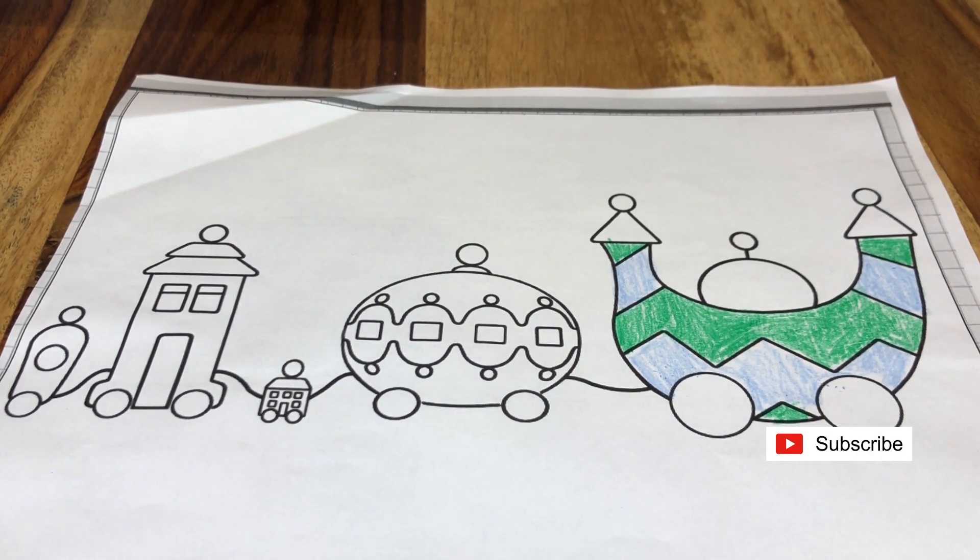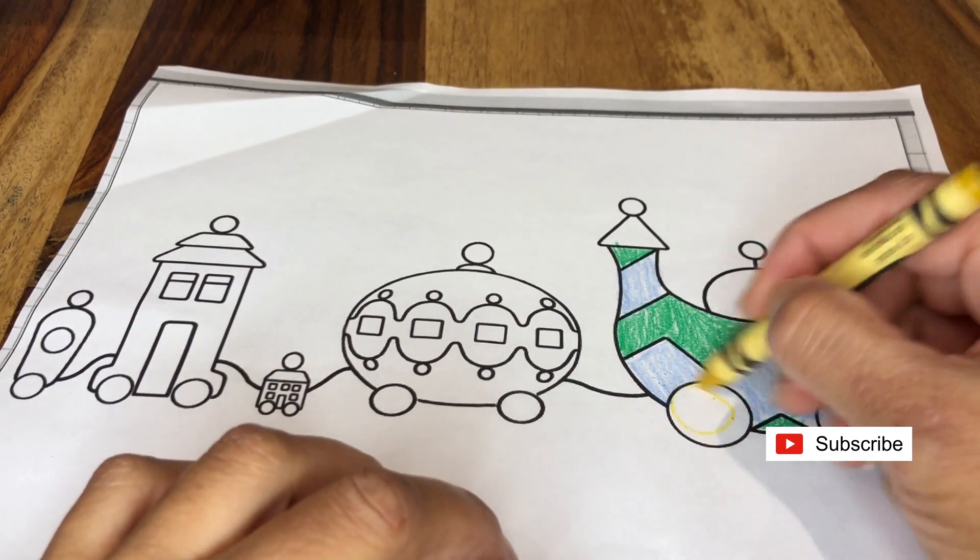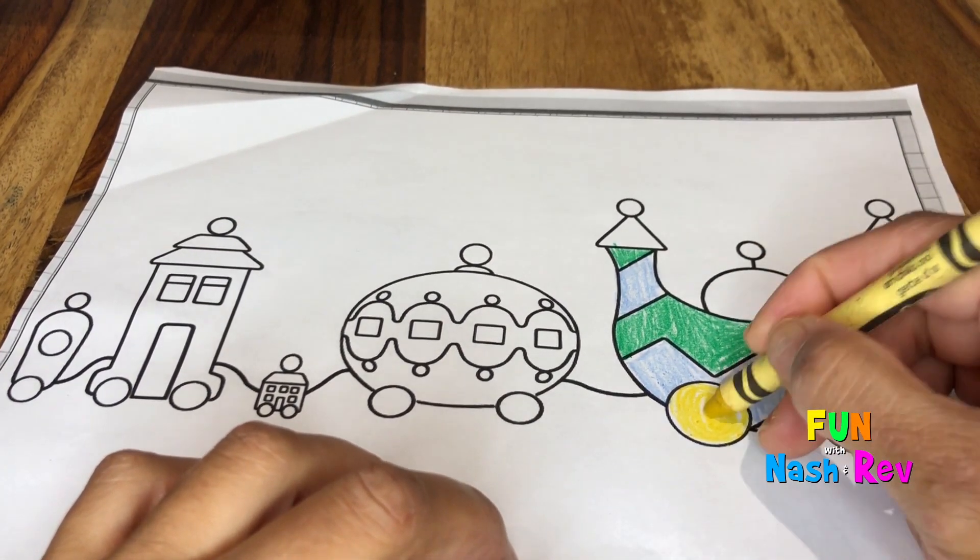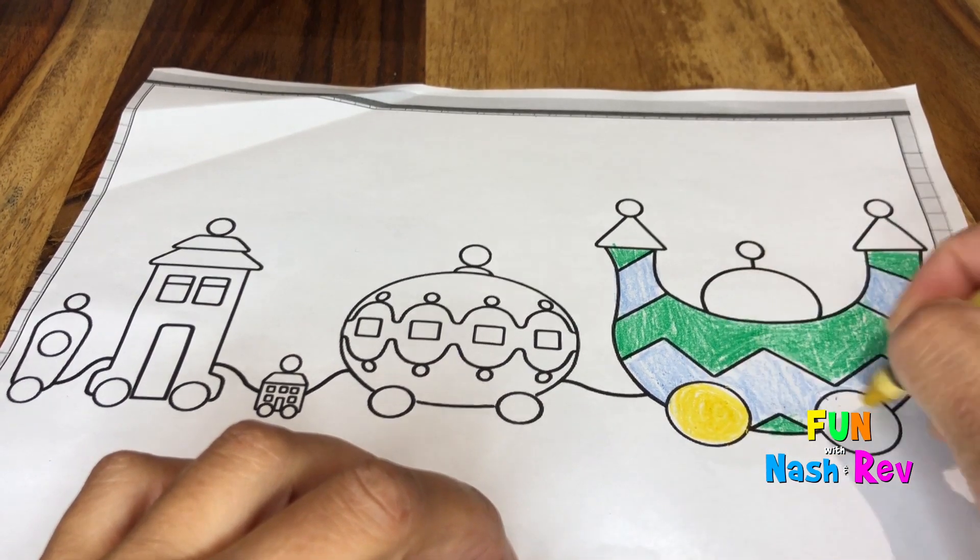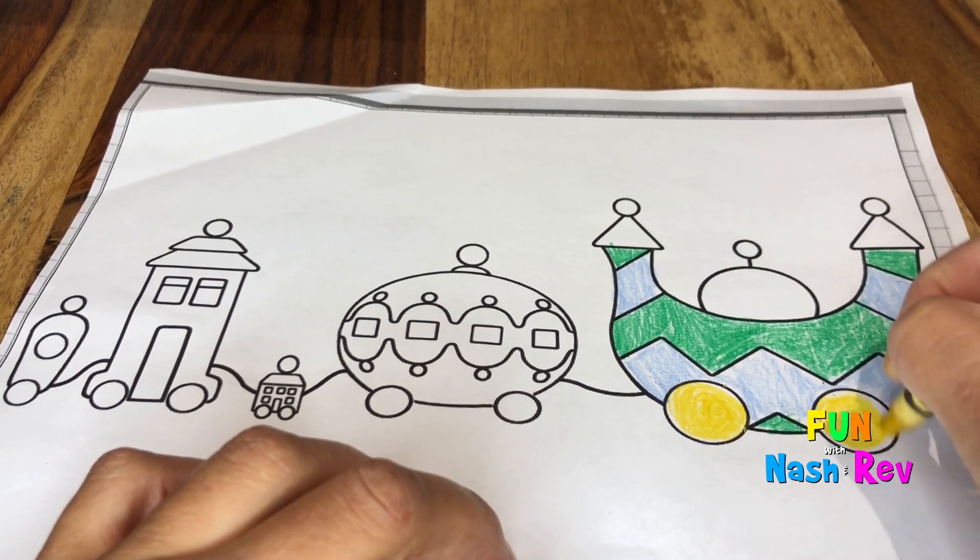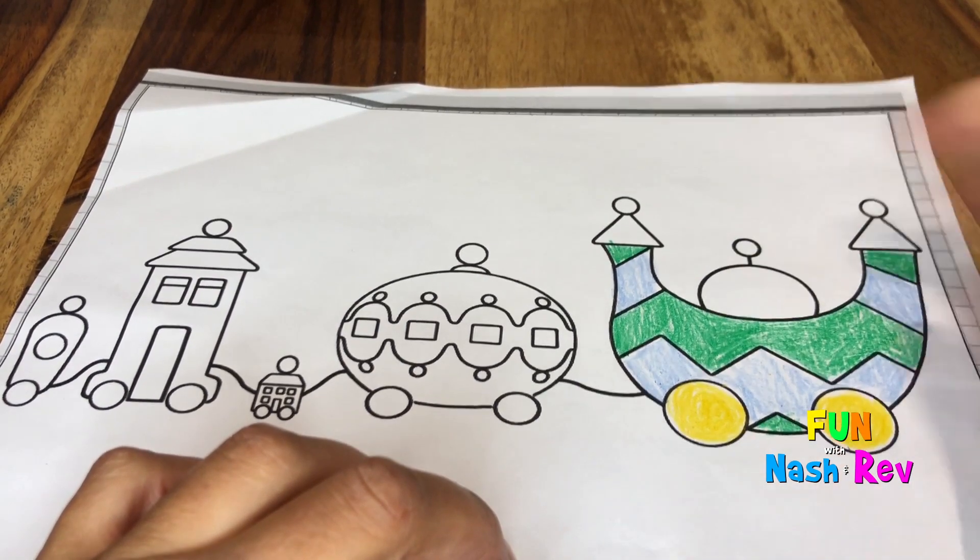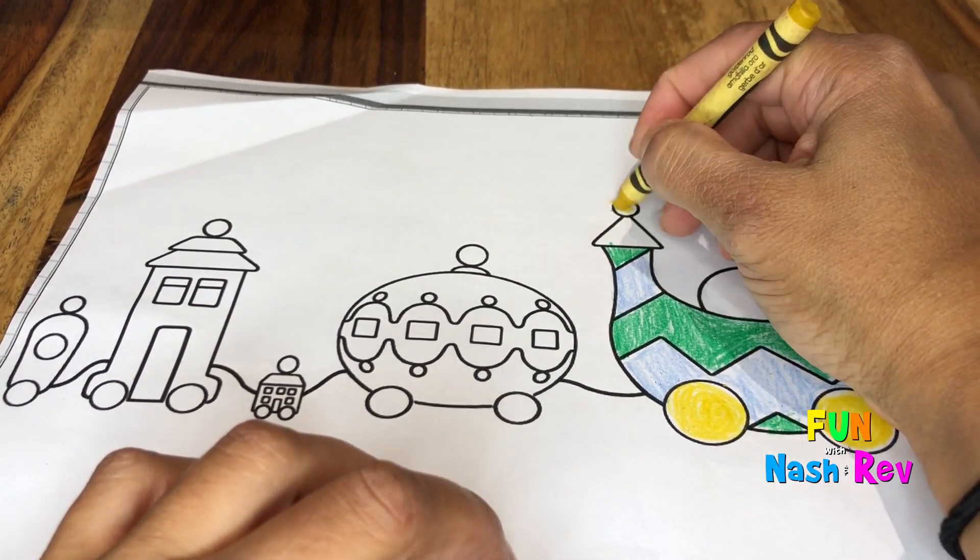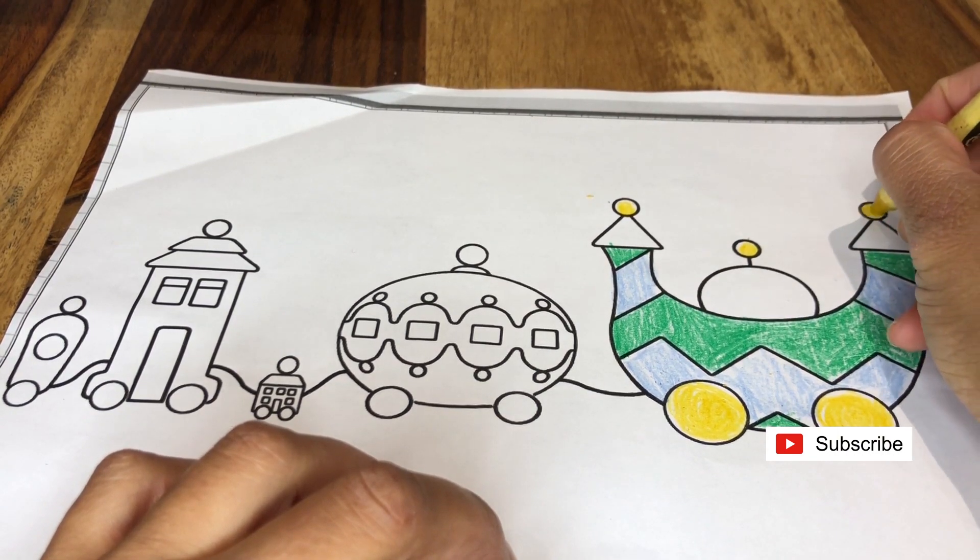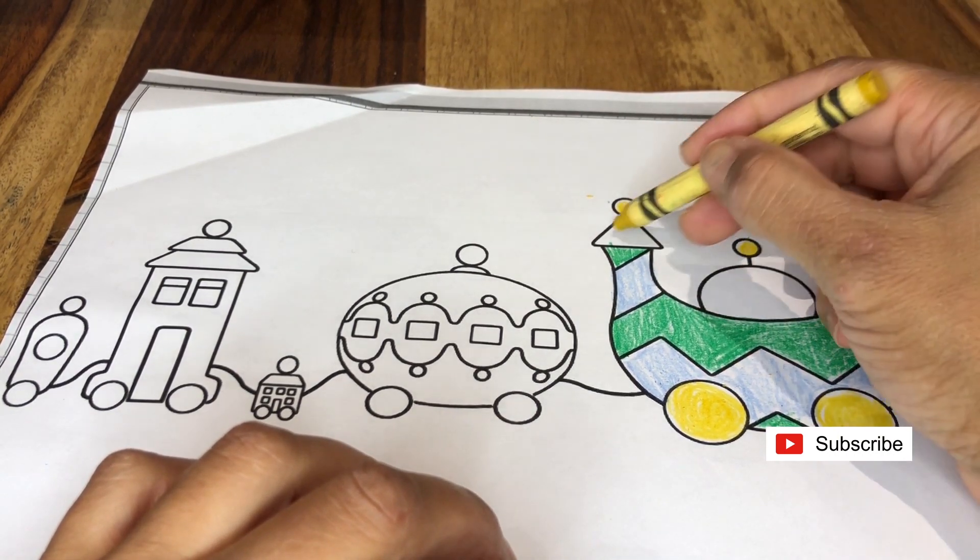Let's see, yellow. Wow, one wheel, two wheels. And let's color these yellow as well, all the circles are yellow.